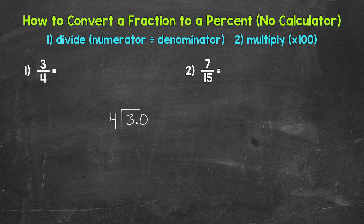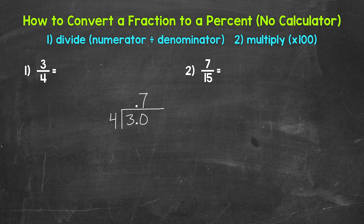Remember, zeros to the right of a decimal do not change the value of a number, so we're able to do this. Let's take the decimal and bring it straight up into where the quotient — the answer — will be. Now we can go through our division steps. We can think of this as 30 divided by four. How many whole groups of four in 30? Seven. That gets us to 28. Make sure that seven is above the zero, not the three, since we used that zero and thought of this as 30 divided by four.